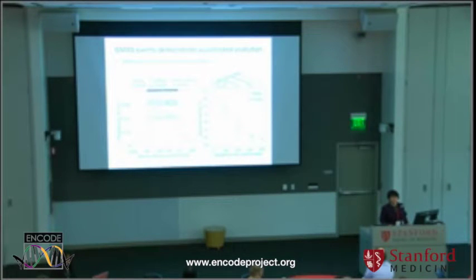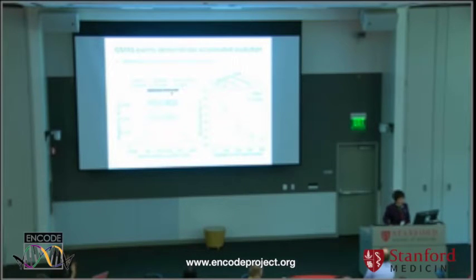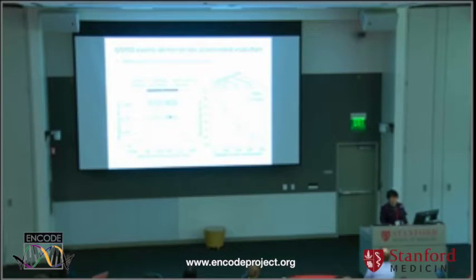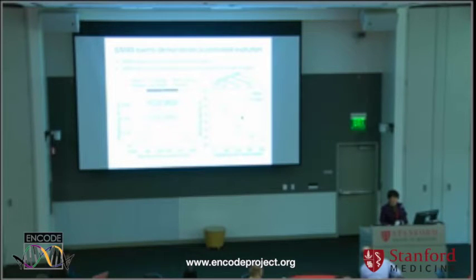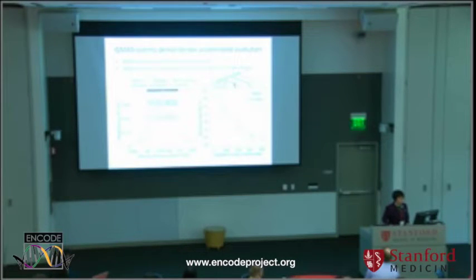We also examined evolutionary conservation. Separating coding and non-coding events, GMS exons are less conserved than controls — statistically significant, indicating these regions are evolving faster than controls. Looking at sequence identity between human and other genomes, the divergence occurred before primates appeared in the evolutionary tree, so GMS exons have accelerated sequence evolution specifically in primate lineages.